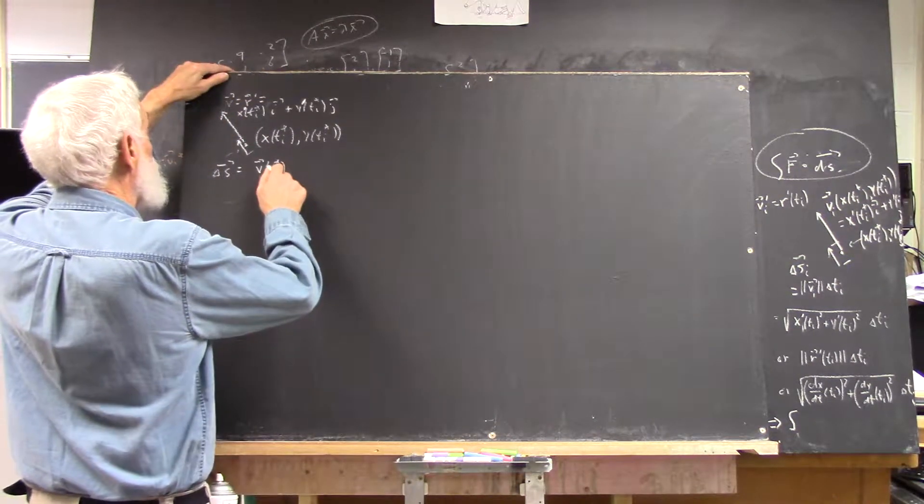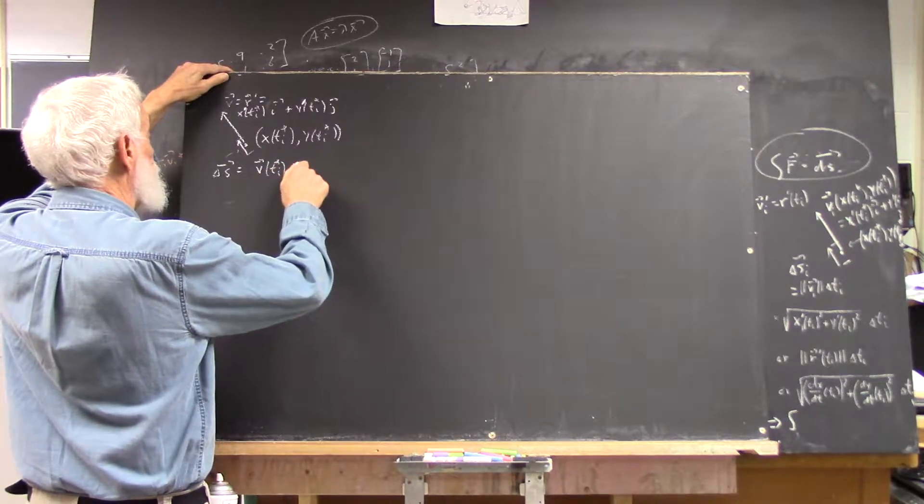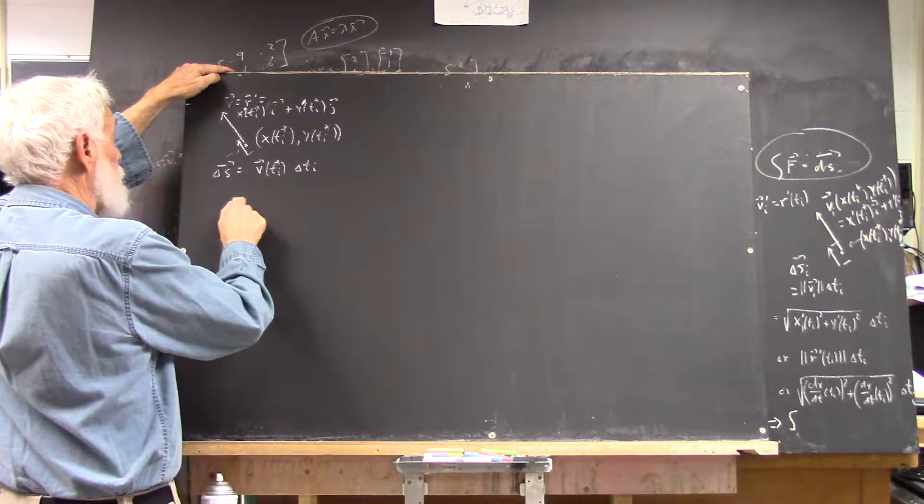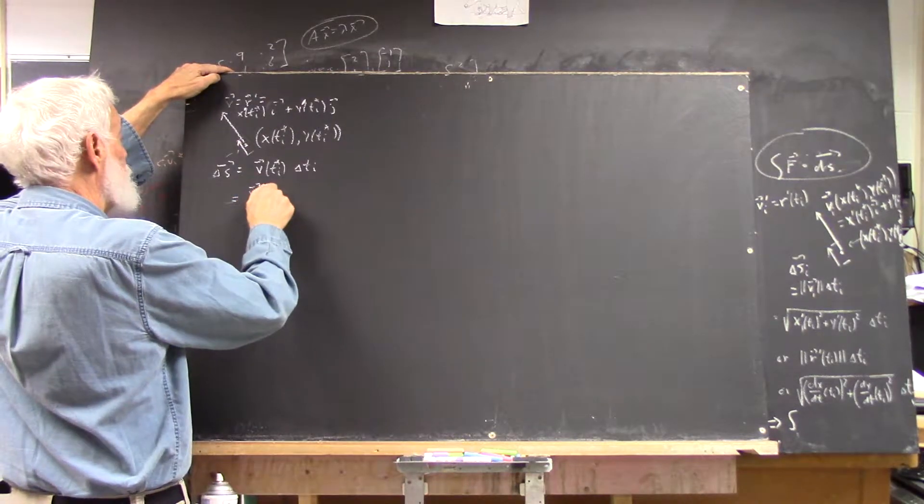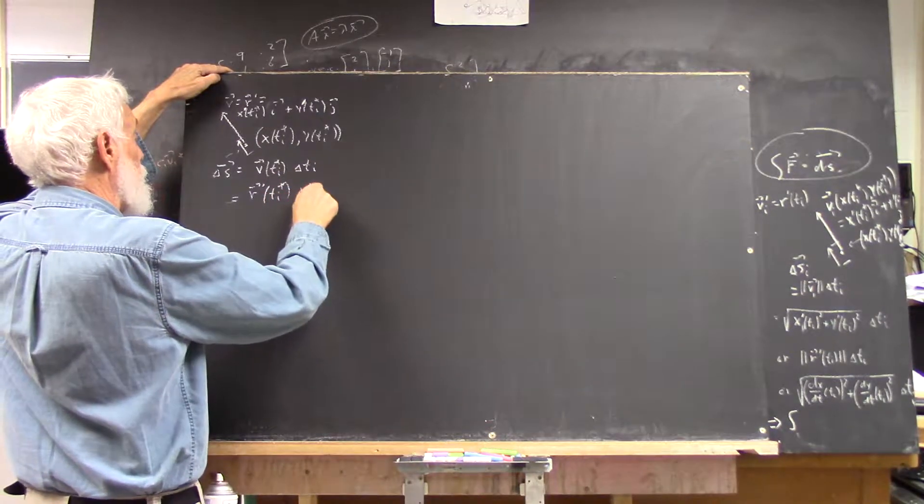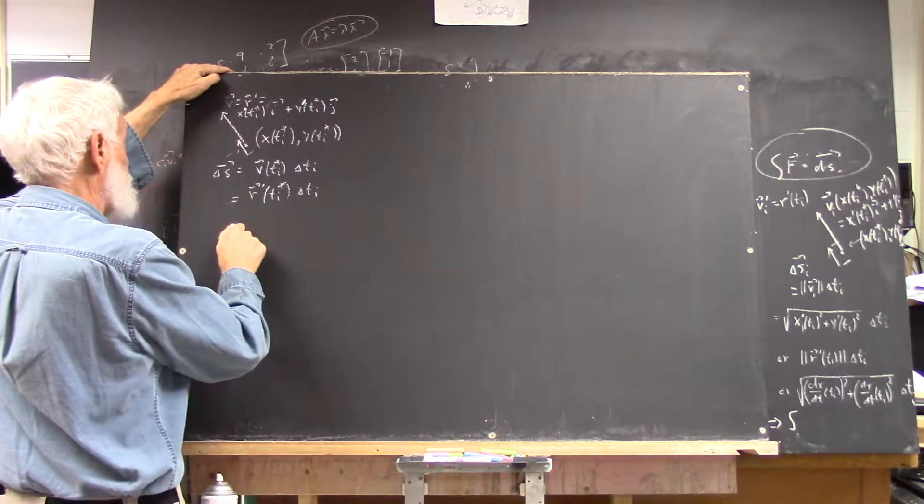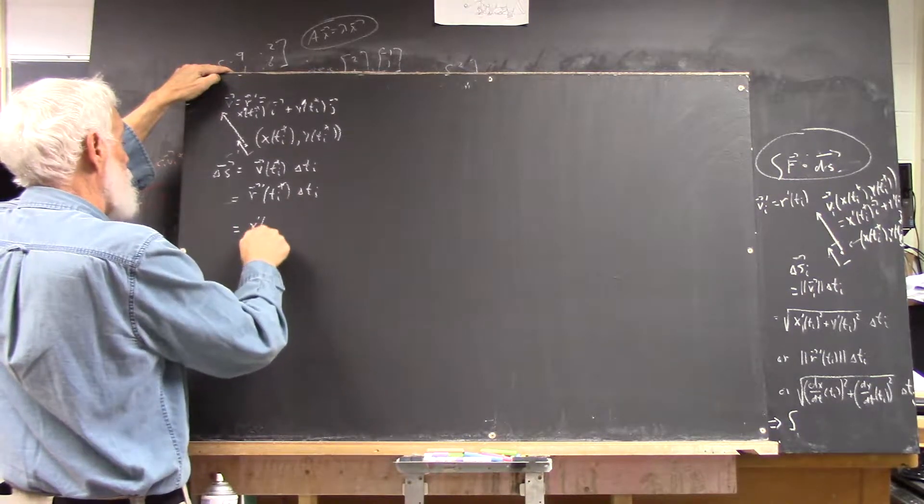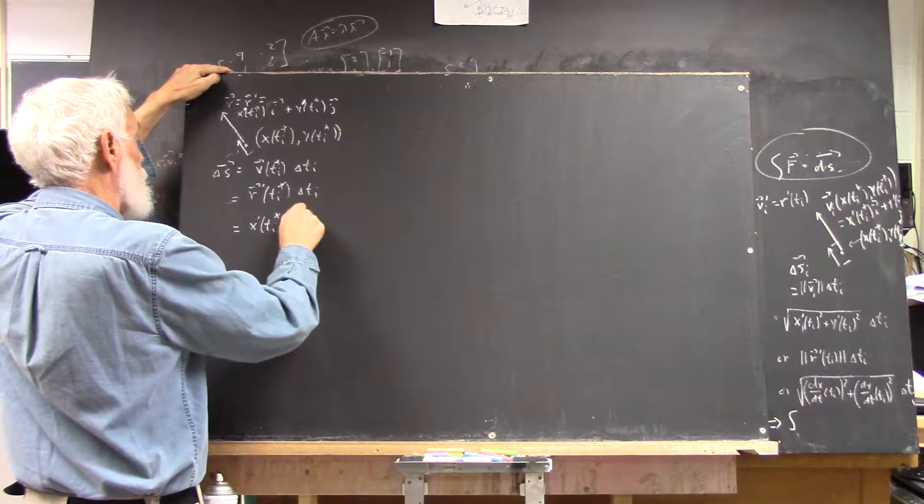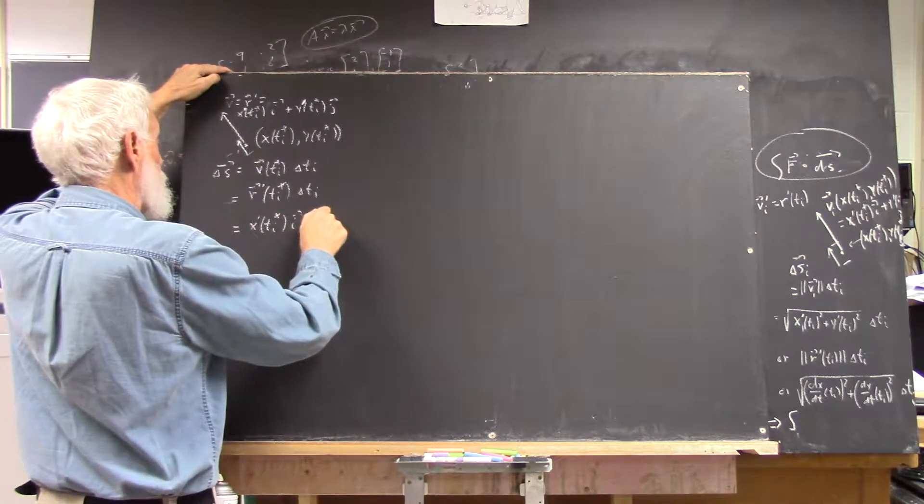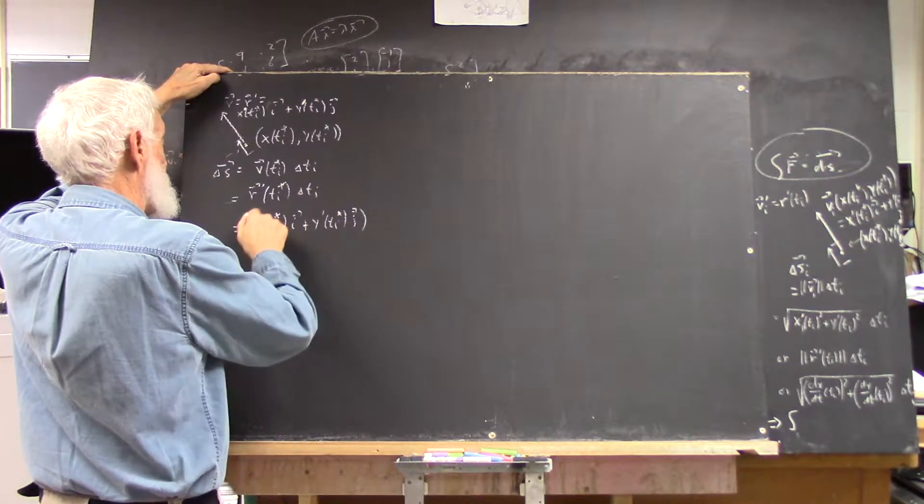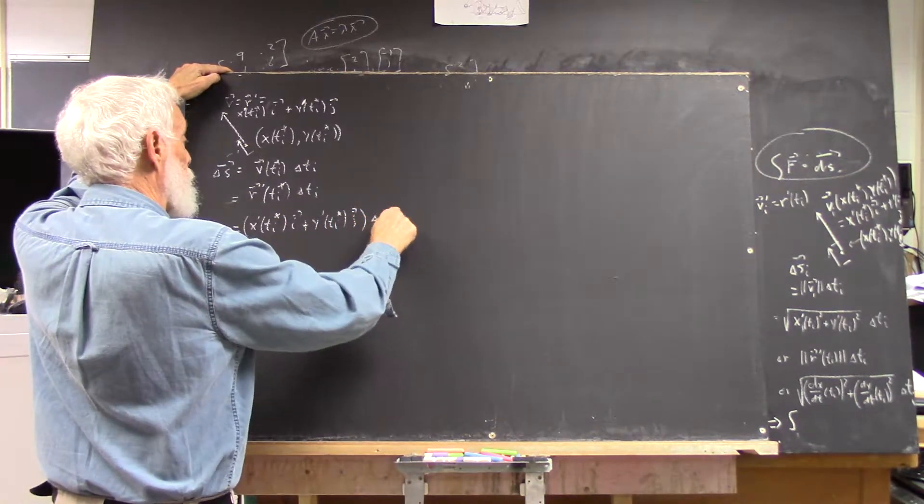So v of ti star times delta ti, and then we can write that out as r prime of ti star delta ti. In any case, it's x prime of ti star i plus y prime of ti star j delta ti.